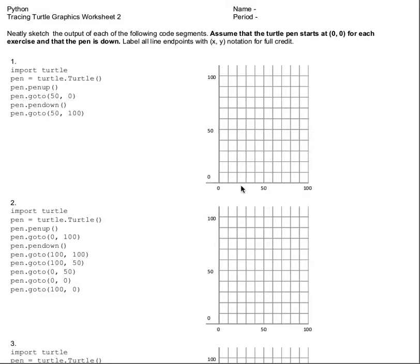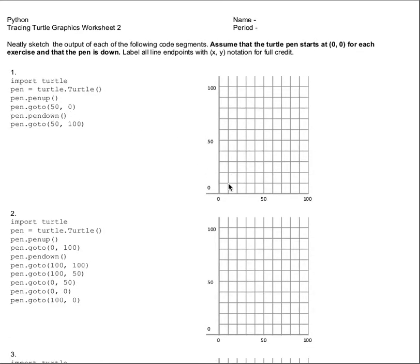Pen up, go to 50, 0. That would be right here, but there would be no line connecting the dots because the pen was up. Then pen goes down and we go to 50, 100, which would be this point. So I'm done with exercise 1. It ends up being a straight up and down vertical line.